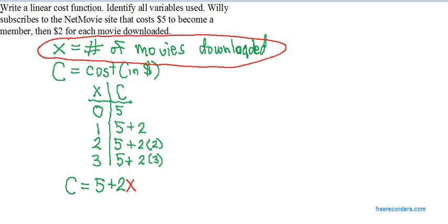So, that's the answer to write a linear cost function, and the answer to identify all variables used were the first two lines I wrote here. Now, let me mention that you could write the answer like this. Here, this is an equally good answer, C of X equals five plus two X. Both equations at the bottom say cost equals five plus two X, the membership fee plus two times the download fee, or X times the download fee.